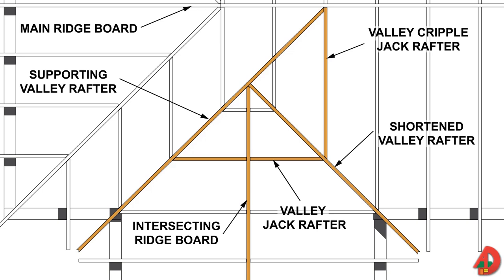When hip and valley rafters are placed close together, the space between them is framed with hip valley cripple jack rafters, all of the same length. A framing square rafter table or a book of rafter tables can be used to find their length. Valley cripple jack rafters are used only on intersecting roofs with unequal spans, placed between the shortened and supporting valley rafters. The run of a valley cripple jack rafter is always twice the run of the valley jack rafter it meets at the shortened valley rafter; therefore, its length is also twice that of the valley jack rafter.